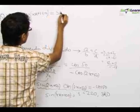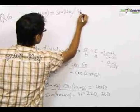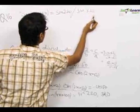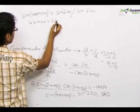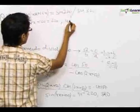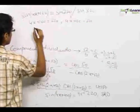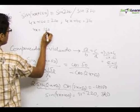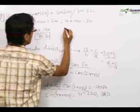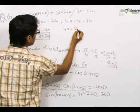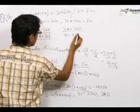So sin(4x+100) equals either sin(220°) or sin(320°). On comparing: 4x+100 = 220° gives 4x = 120°, so x = 30°. And 4x+100 = 320° gives 4x = 220°, so x = 55°.